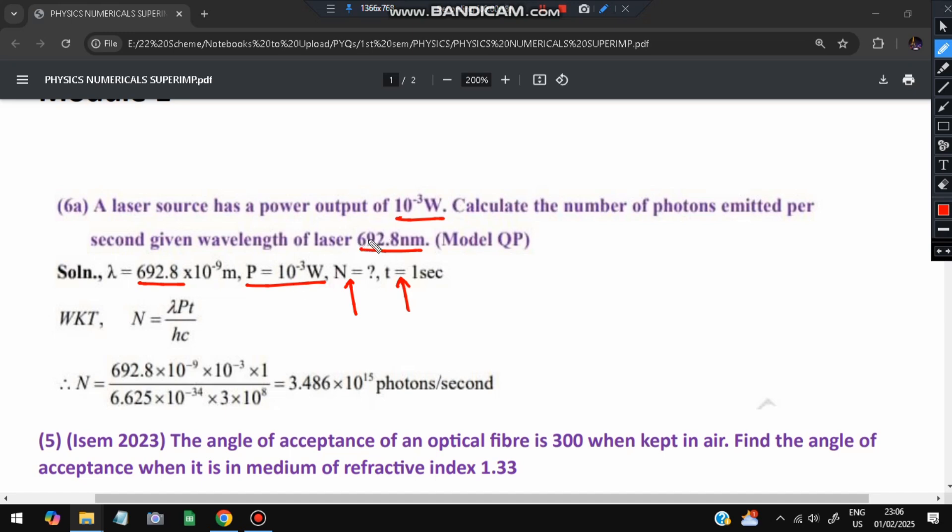The formula for calculating the number of photons is N = λPt/hc. We substitute lambda from here, P value is given, t is one second, and hc value is constant. We'll be putting that constant value here and we will get the value of photons per second. This is to calculate the number of photons given the wavelength.